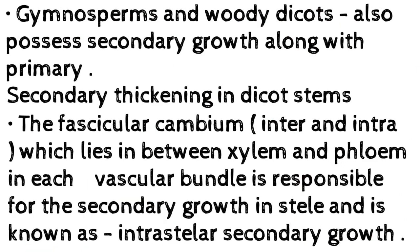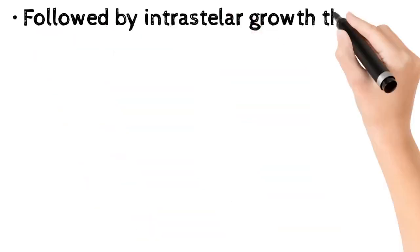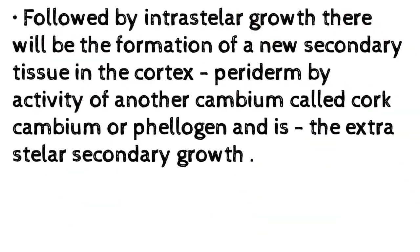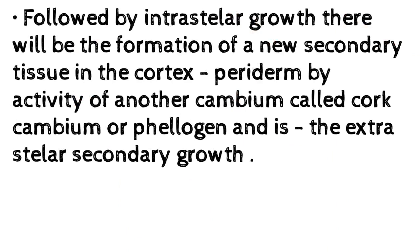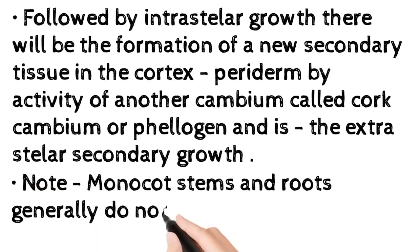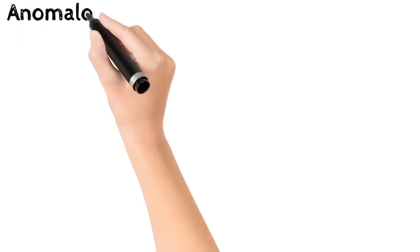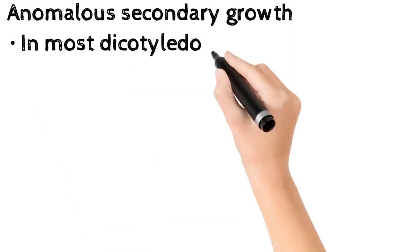In dicot stems, the fascicular cambium, which lies between xylem and phloem in each vascular bundle, is responsible for secondary growth in the stele — known as intrastellar secondary growth. Following intrastellar growth, a new secondary tissue, the periderm, forms in the cortex by the activity of another cambium called cork cambium or phellogen — this is extrastellar secondary growth. Note: monocot stems and roots generally do not undergo secondary growth due to absence of cambium.